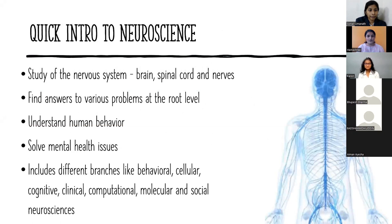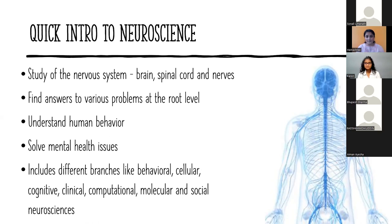Neuroscience is the study of the nervous system — the brain, the spinal cord, the nerves. As most of you would be aware, the brain and nervous system together control every single part of your body. When we talk about neuroscience, we can actually find answers to various problems at the root level. Suppose a person has a stroke and is unable to move his legs properly — that is because of some problem in the brain. Neuroscience helps us find answers to problems at the root level.